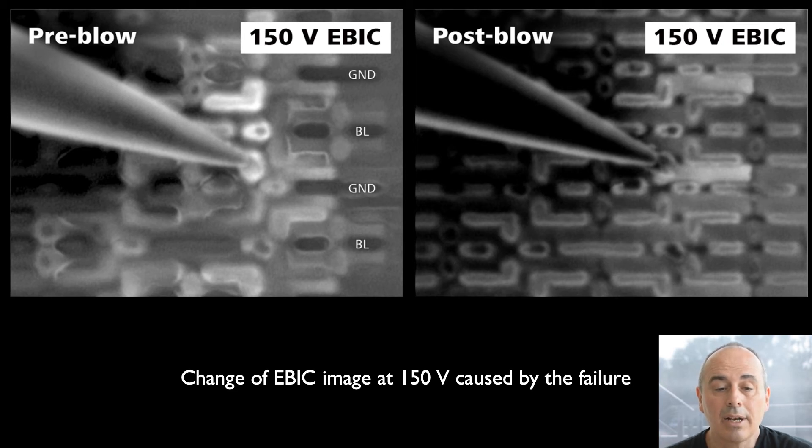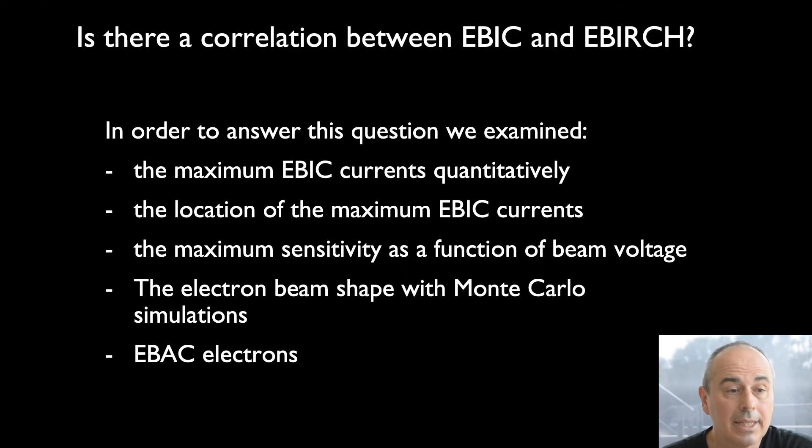This was the first indication that the short has likely gone to the well. To sum up, we can see a strong change in the EBIC results after creating the failure. And the question arises, can we use EBIC instead of EBIRCH to verify and locate failures? Or, is there a correlation between EBIC and EBIRCH? In order to answer this question, we examined the following.